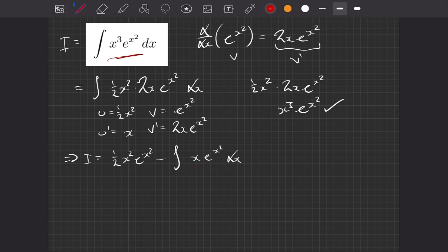And what we see then is our new integrand is very similar to what we sort of wanted up here. So all we're going to do is we're going to multiply that by 2 and multiply it out the front by a half.